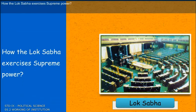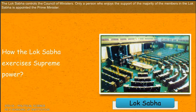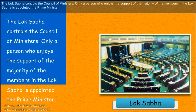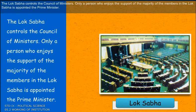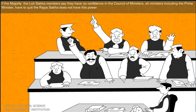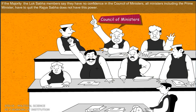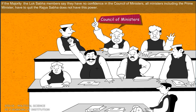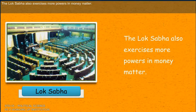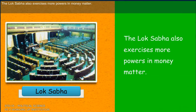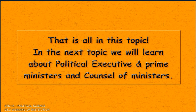How does the Lok Sabha exercise supreme power? The Lok Sabha controls the council of ministers. Only a person who enjoys the support of the majority of members in the Lok Sabha is appointed as Prime Minister. If the majority of Lok Sabha members say they have no confidence in the council of ministers, all ministers including the Prime Minister have to quit. Rajya Sabha does not have this power. The Lok Sabha also exercises more powers in money matters.